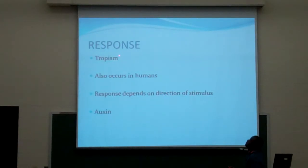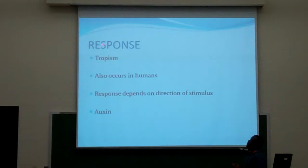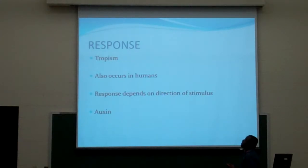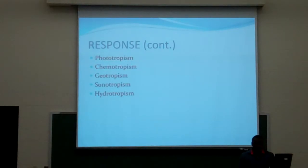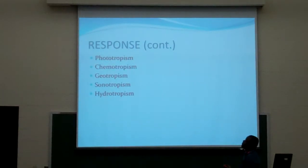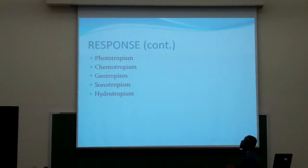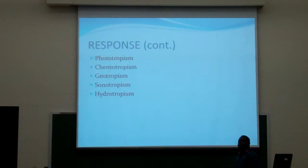The last stage of the cell signaling process is the response. We have tropisms — tropisms is the group of mechanisms towards a stimulus. We have different types of tropisms: we have phototropism, which is the response to light; we have gravitropism, which is the response to gravity; and then we have thigmotropism, which is the response to touch.